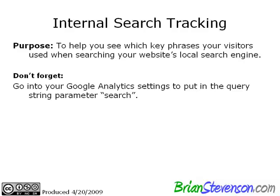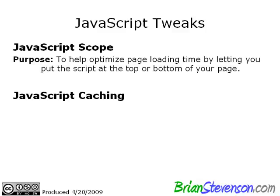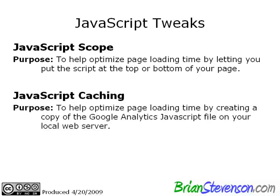Let's check out the JavaScript tweaks. You've got two things you can configure: scope and caching. The scope will help you optimize page loading time by letting you put the Google script at the top or at the bottom of your page. When it's at the top, it loads before the rest of your page, which can cause a lag, so it's recommended to put it at the bottom. JavaScript caching will let you optimize page loading time by creating a local copy of your Google Analytics JavaScript file on your web server.